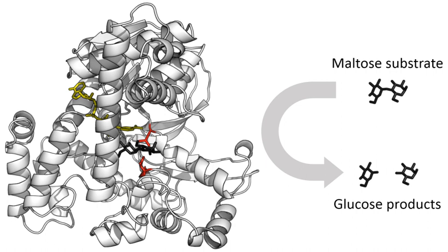Following Buchner's example, enzymes are usually named according to the reaction they carry out. The suffix -ase is combined with the name of the substrate, e.g. lactase, or to the type of reaction, e.g. DNA polymerase forms DNA polymers. The biochemical identity of enzymes was still unknown in the early 1900s. Many scientists observed that enzymatic activity was associated with proteins, but others, such as Nobel laureate Richard Willstätter, argued that proteins were merely carriers for the true enzymes and that proteins per se were incapable of catalysis.